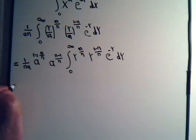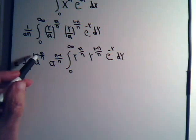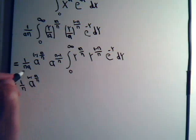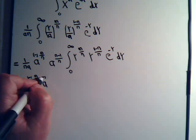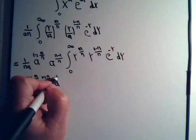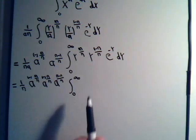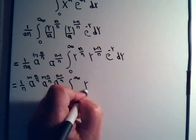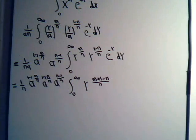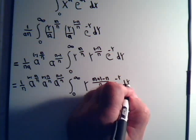We still have an a down here, so let's rewrite this part: 1 over n. This would be times a to the minus 1. Here we have a to the minus m over n times a to the minus 1, that would be minus n over n — that's a to the minus 1 — times a to the n minus 1 over n. Then we have this integral, and since they have the same denominator, we have y to the m plus 1 minus n divided by n, times e to the minus y dy.